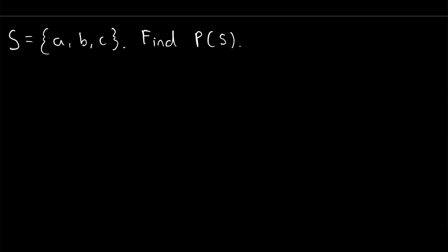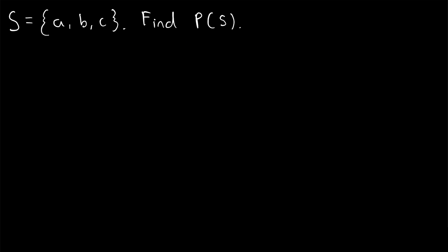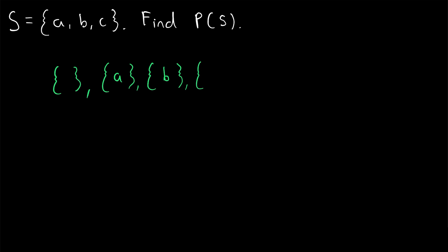Now we get into the last two examples that have a bit more writing. We've got a set S that has three elements. Start off with the empty set — it's a subset of every set. S has elements A, B, and C. The set containing just A is a subset of S. The set containing just B is a subset of S. And the set containing just C is a subset of S. This is how I like to go about listing out the subsets — start with subsets that have zero elements, then one element, then two elements, and so on.